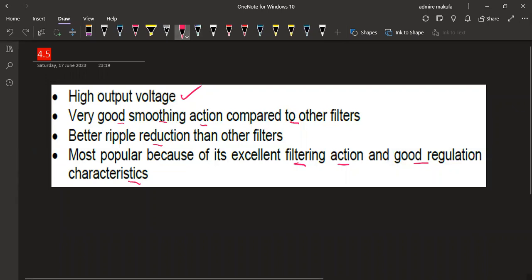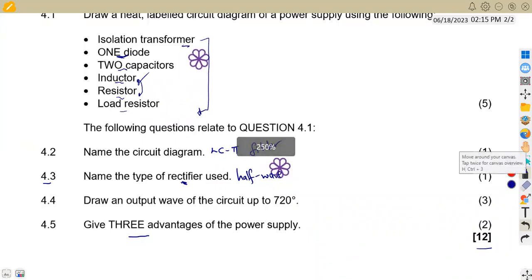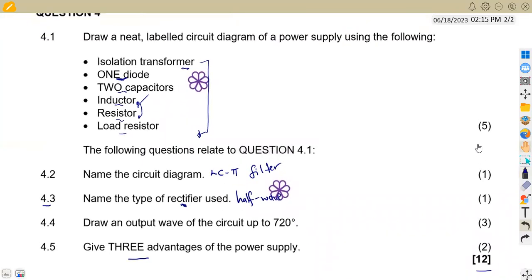We just need three advantages from these ones. We can take any three from the information we are given. So this is what we had, 12 marks. Let us continue to revise our theory, our diagrams.